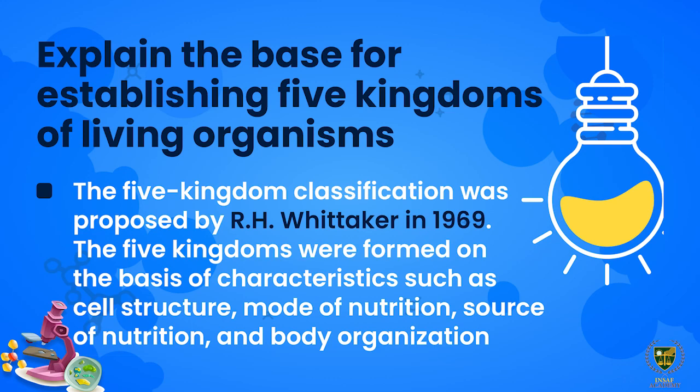The five kingdom classification was proposed by R.H. Whittaker in 1969. The five kingdoms were formed on the basis of characteristics such as: cell structure — what the cell structure is like; mode of nutrition — how organisms prepare or obtain their food; source of nutrition — from which source food is obtained; and body organization — how different organs or organ systems are organized in the organism's body.